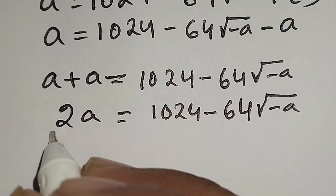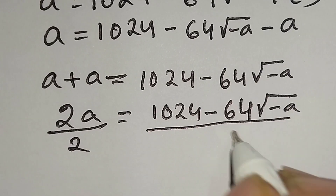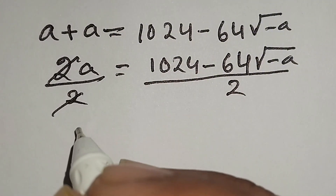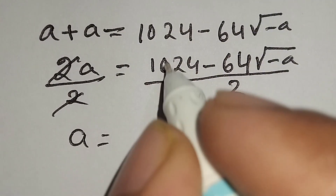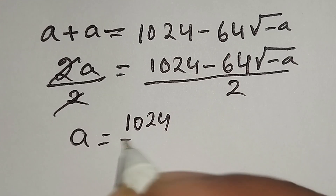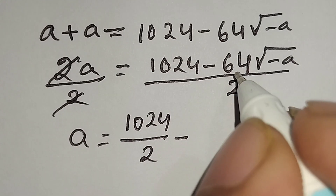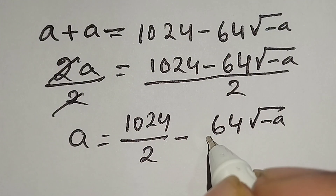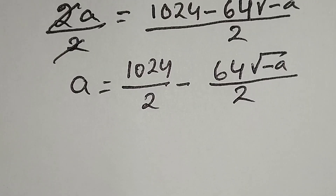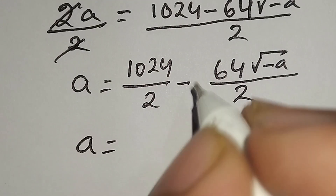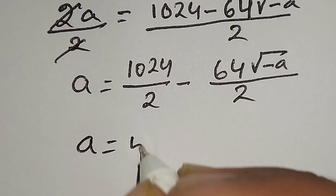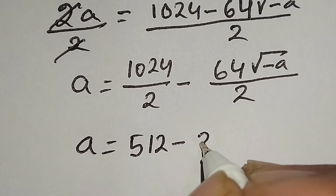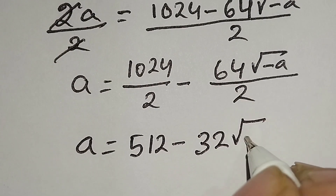Now we divide both sides by 2. The 2s cancel out, giving a equals 1024 over 2 minus 64 times square root of negative a over 2. So a equals 512 minus 32 times square root of negative a.